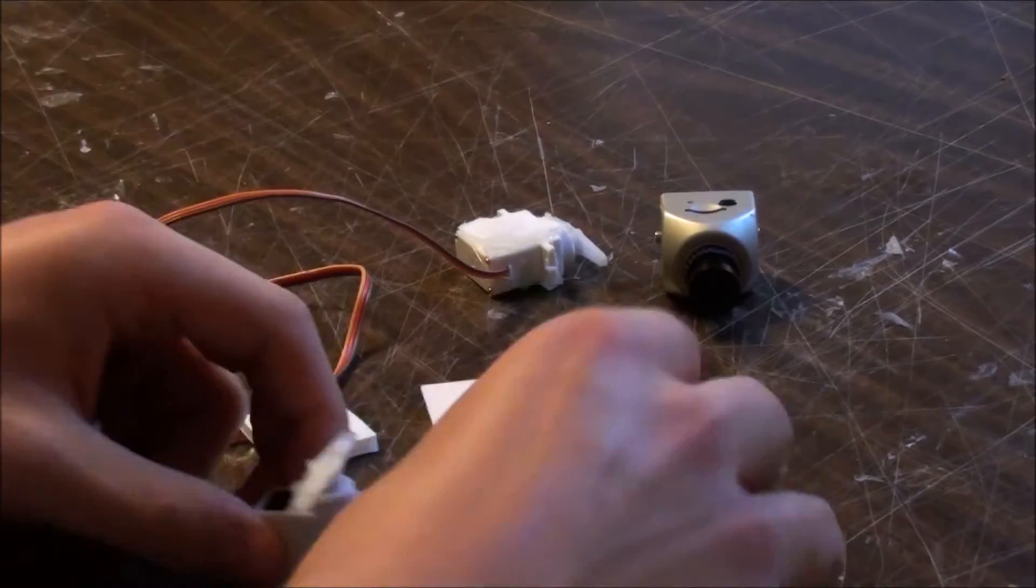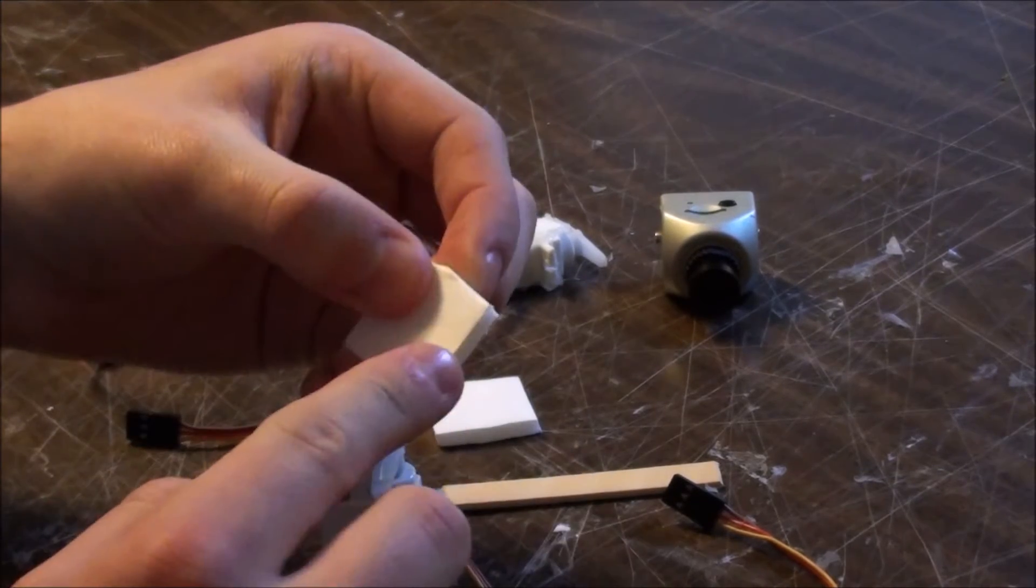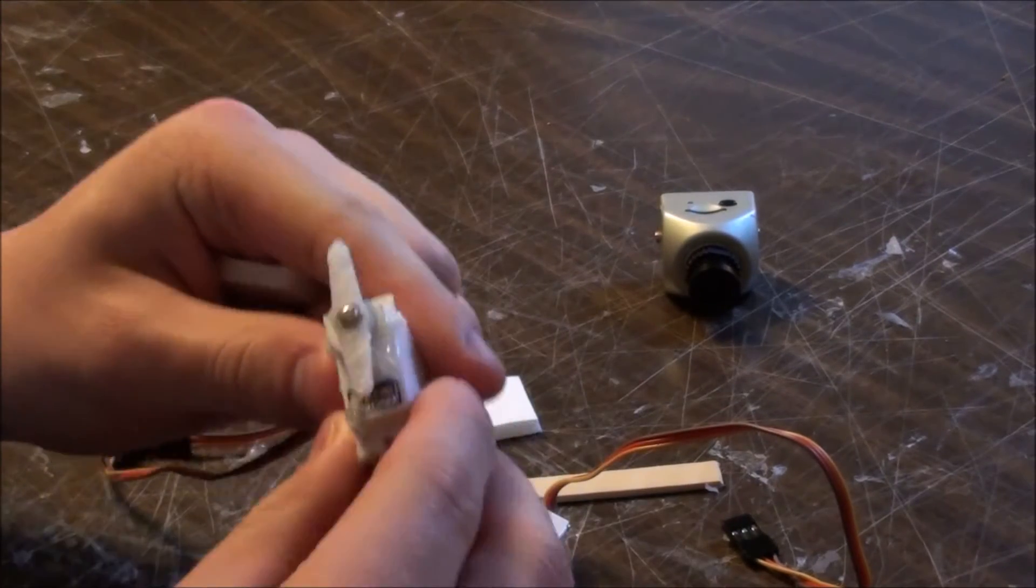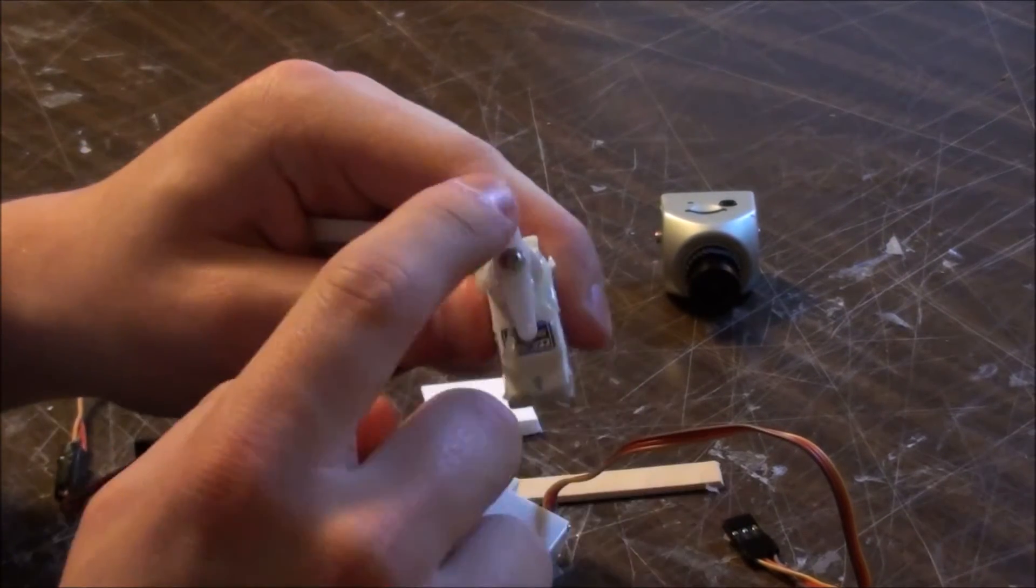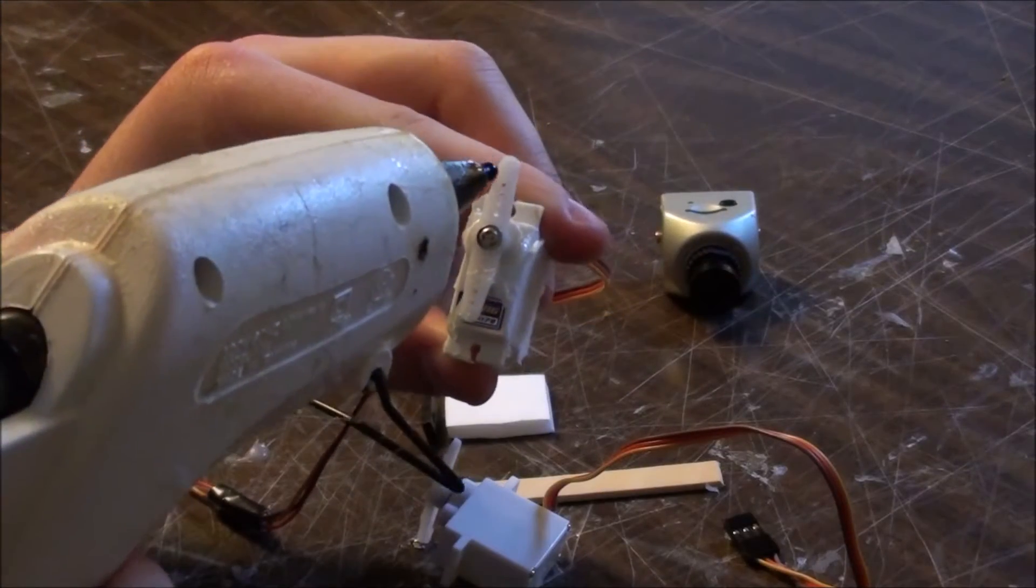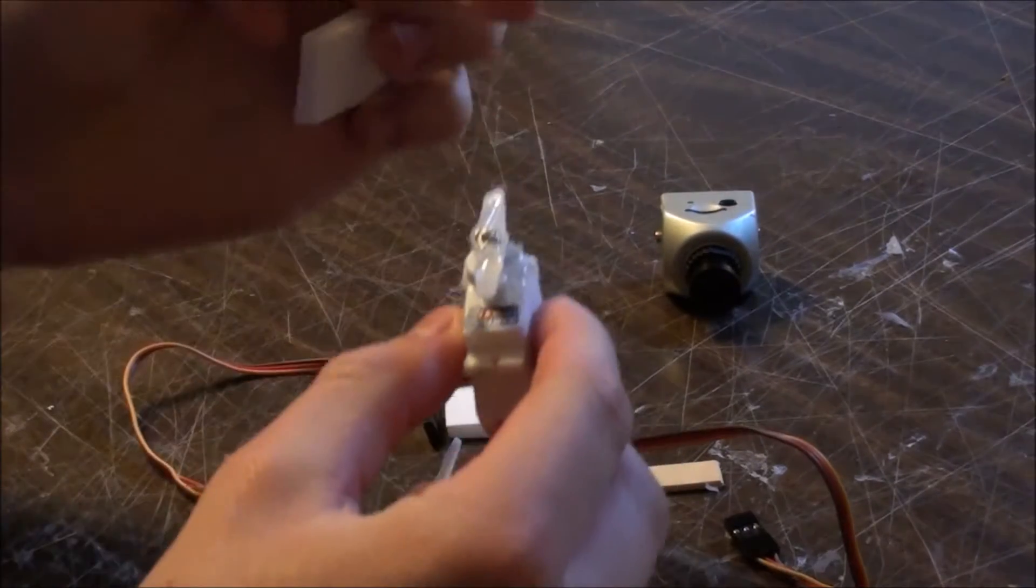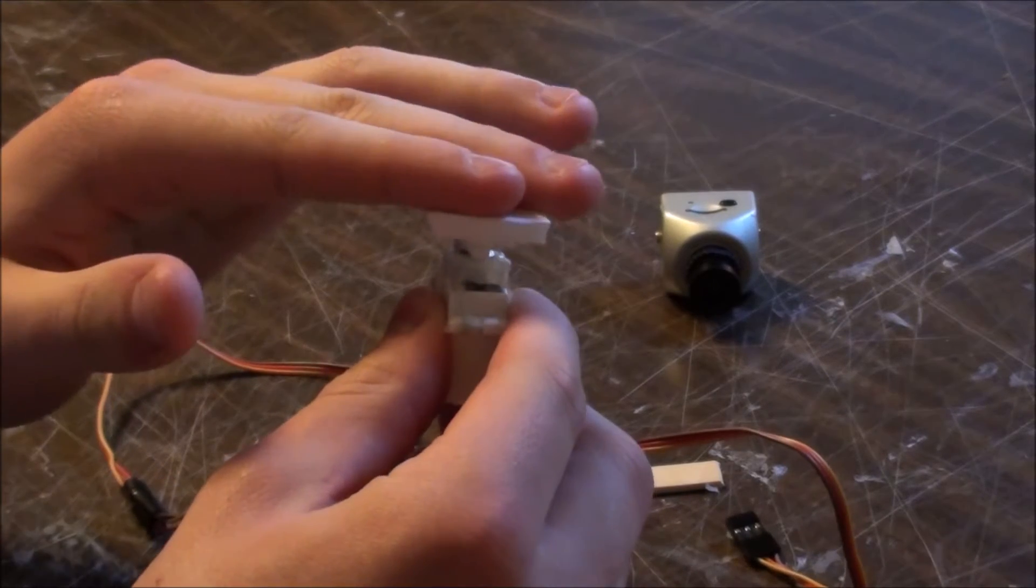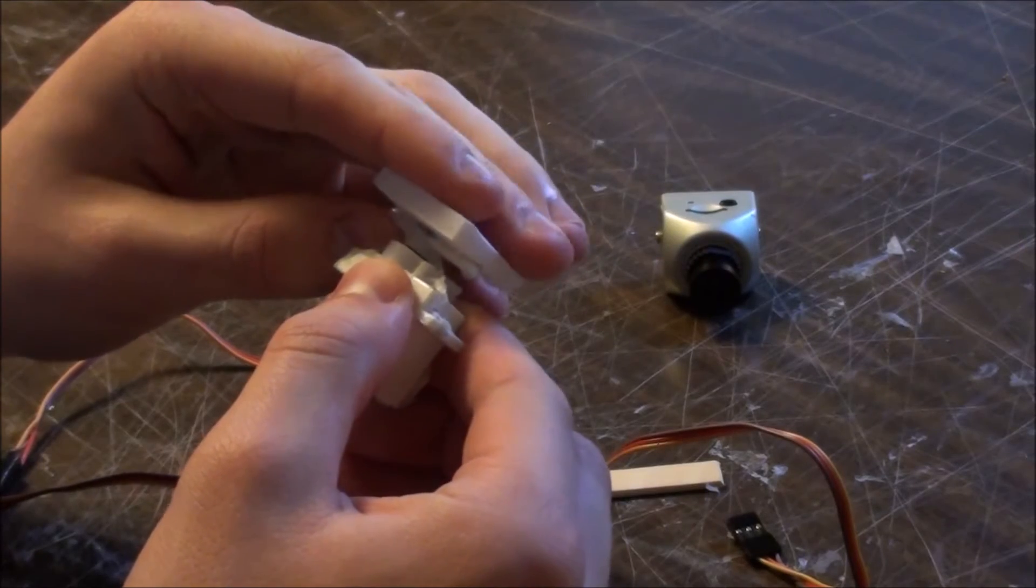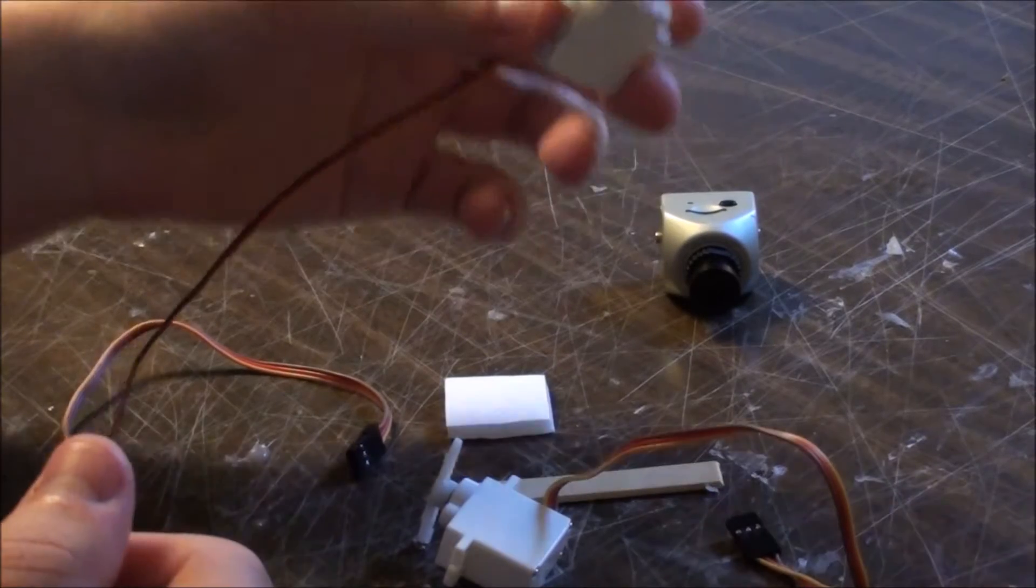So basically, what we're going to do first is take one of our pieces of Dollar Tree foam board, which is 1 inch by 1 inch, and we're going to glue it right on top of the servo that has the control horn that's parallel with it. We'll go ahead and take our hot glue gun, put it right on top, and set the foam board down. You can also use epoxy if you want to, but for sake of time, I'll just use hot glue.